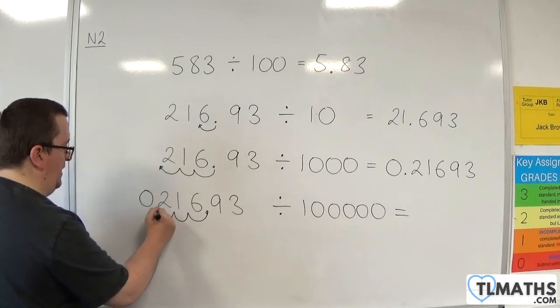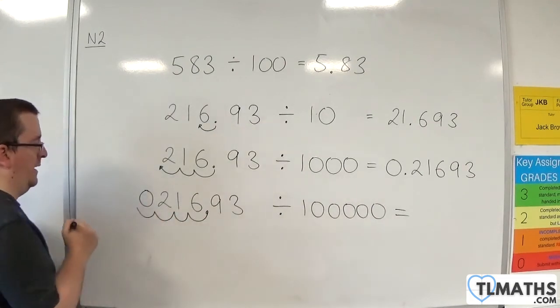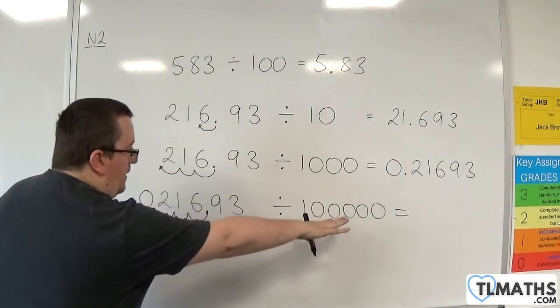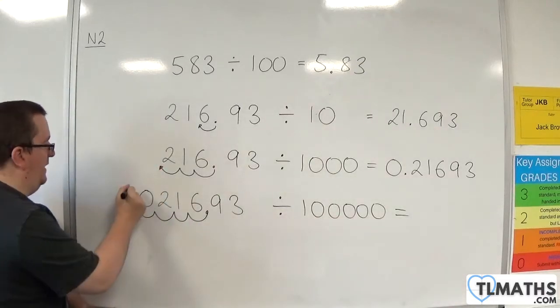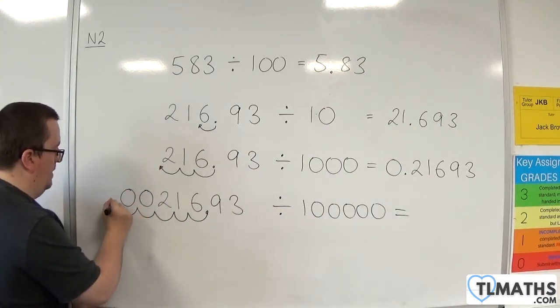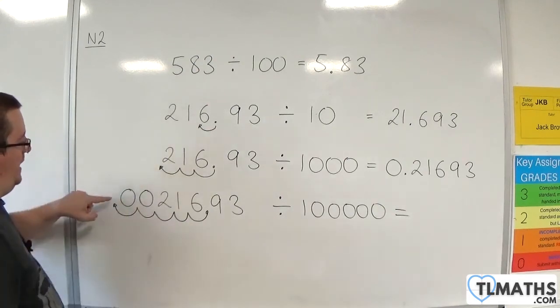So that I've got one, two, three. I've already done three, so I need to do one more. But I need to do five, so I need to do one more after that. So I'm going to need to add in another zero. Then my decimal point is going to end up here.